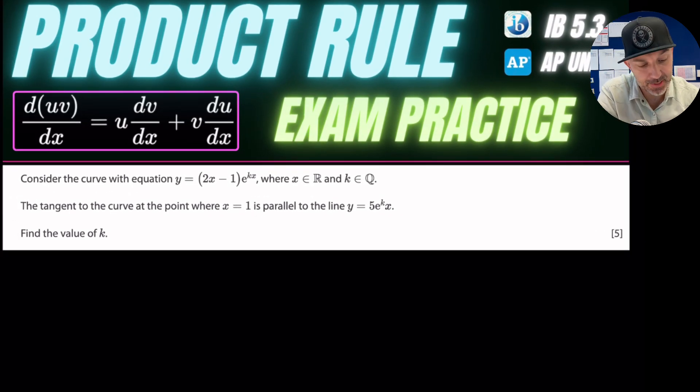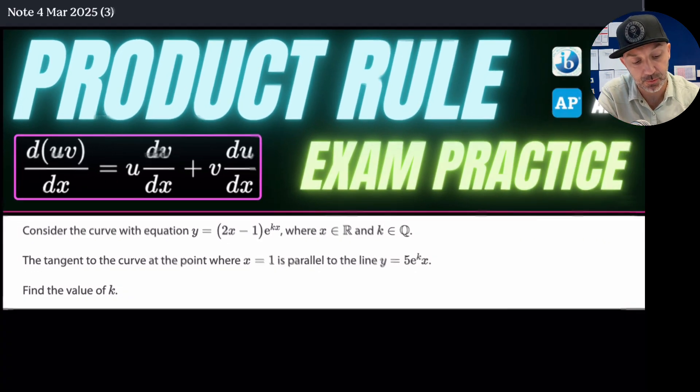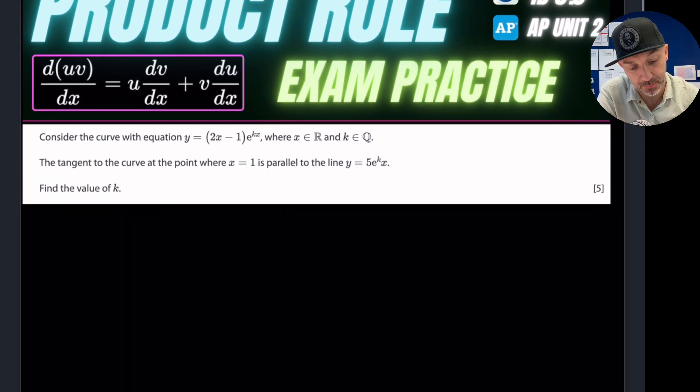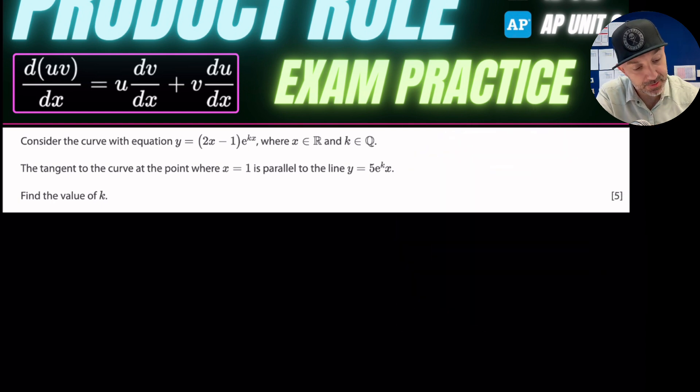This will feature in IB, AP, A-level, any calculus course. We have the product rule formula here which is u times the derivative of v plus v times the derivative of u. Watch one of my other videos if you want me to explain the product rule in more detail. I'm going to set the timer going. If you want to take a picture of this and do it and then check your answer, please do so, but we're going to get started.